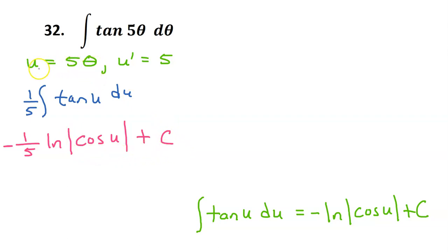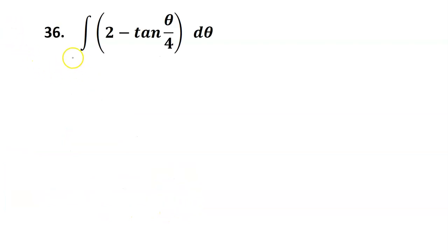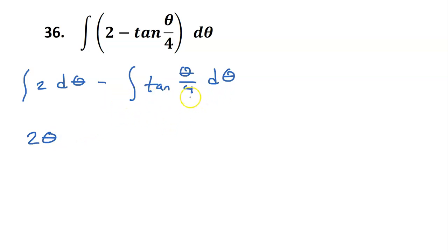Substituting 5 theta back in for u, we get the final answer. For number 36, we can integrate term by term. So we have the integral of 2 d theta minus the integral of tangent theta over 4 d theta. The first part is just going to be 2 theta plus c, but we have more coming, so we can just focus on the tangent.